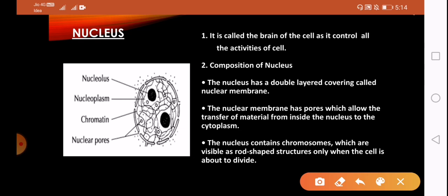Composition of nucleus: it has a double layer structure. As you can see in the diagram, this double layer structure is called nuclear membrane.